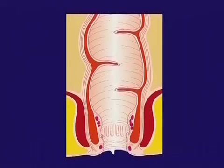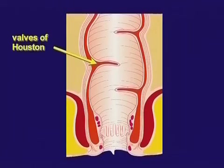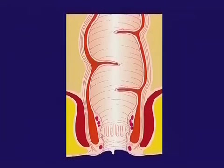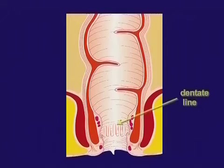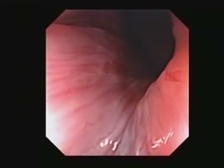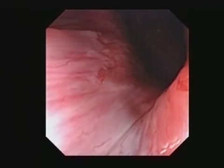The endoscopist's view of the anatomy is simple, with prominent folds, the valves of Houston, sometimes skin papillae at the opening, and then the squamous columnar junction, or dentate line, which is seen here on inserting the endoscope.